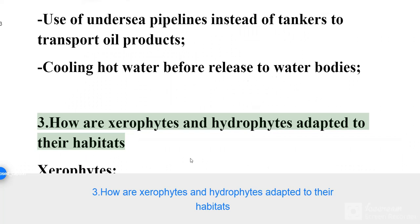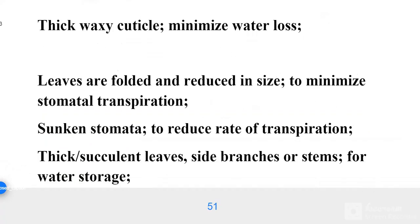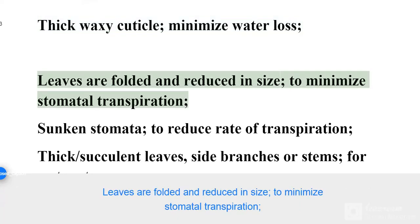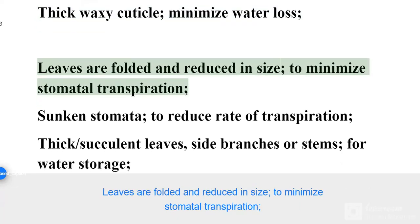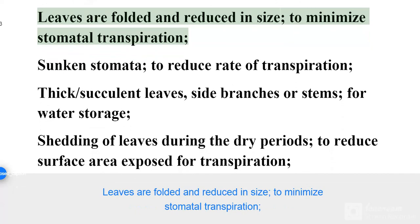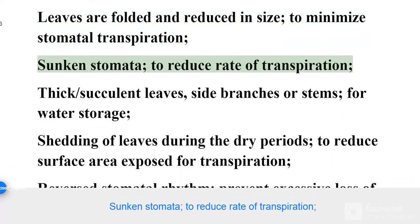How are xerophytes and hydrophytes adapted to their habitats? Xerophytes have a thick waxy cuticle to minimize water loss. Leaves are folded and reduced in size to minimize stomatal transpiration. Sunken stomata to reduce the rate of transpiration.